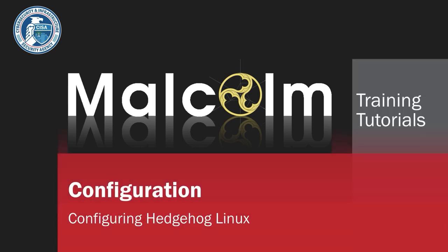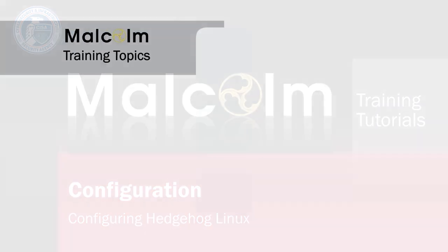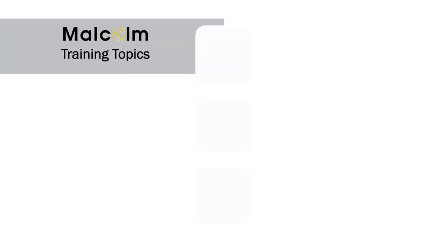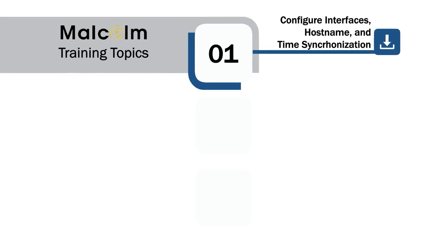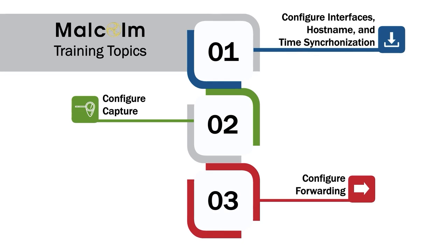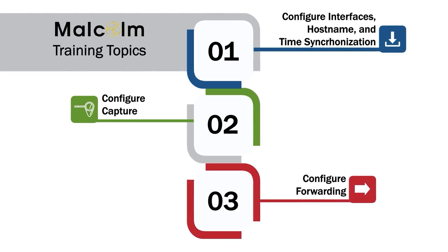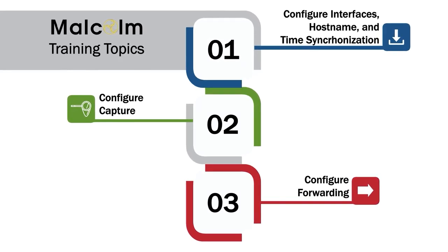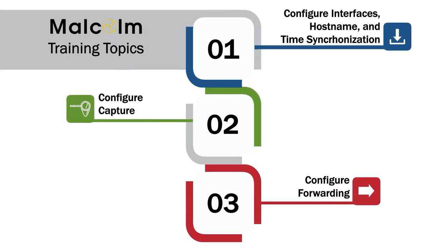Malcolm Training Tutorials: Configuration - Hedgehog Linux. In the previous video, you learned how to install Hedgehog Linux. In this video, we will walk you through configuring interfaces, hostname and time synchronization, configuring capture and configuring forwarding. This will help your sensors to start capturing network traffic and forwarding metadata about that traffic to a Malcolm server.